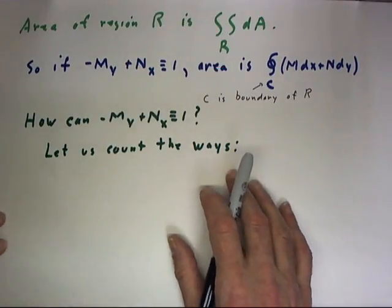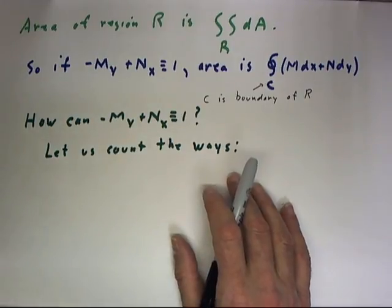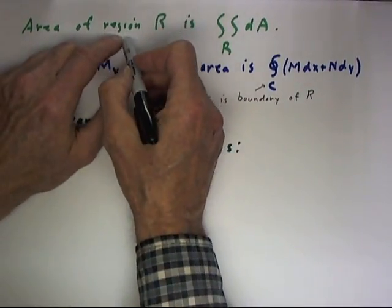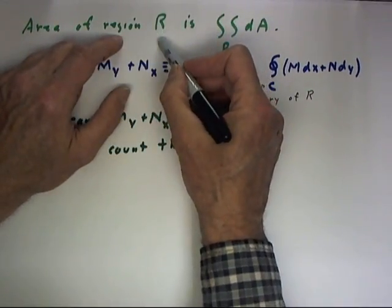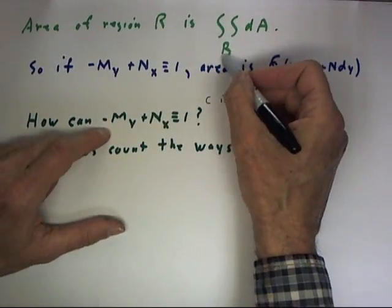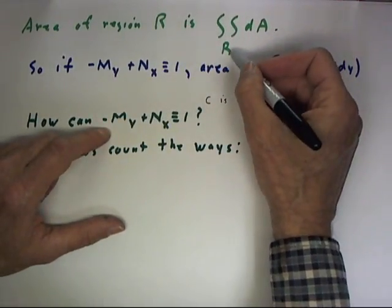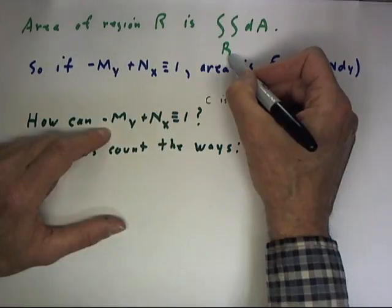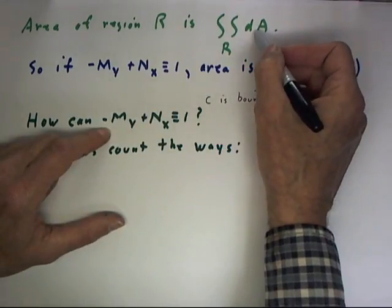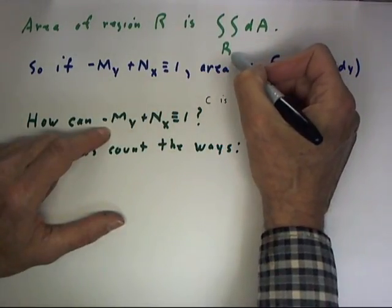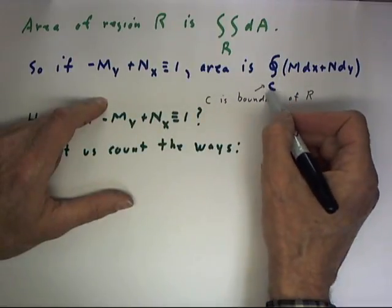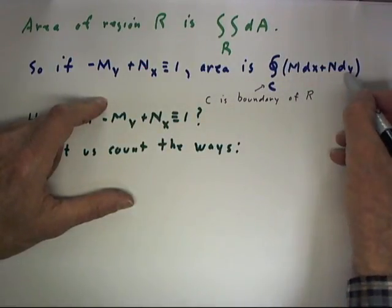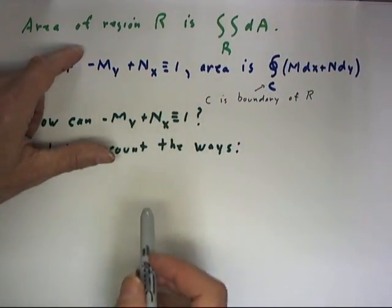One often useful application of Green's theorem is the ability to find the area of a region R by integrating the area over R and by integrating the area using Green's theorem so that we're just integrating over the curve that surrounds the area.